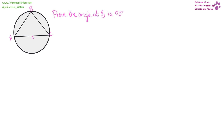We need to prove that the angle at B is 90 degrees. So what I'm going to do is add in another line from the center to B. Now we have three lines going from the center to the circumference, so we know they're all equal, and what we've done is set up some isosceles triangles. I'm going to call this angle X, so angle AOB equals X, and that angle Y, so angle BOC equals Y. Because they're on a straight line, X plus Y equals 180.